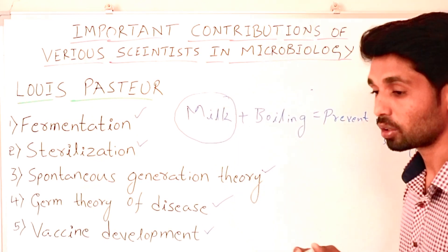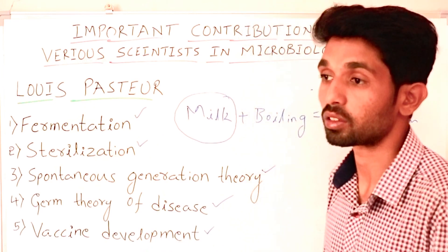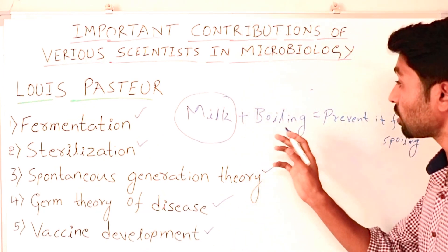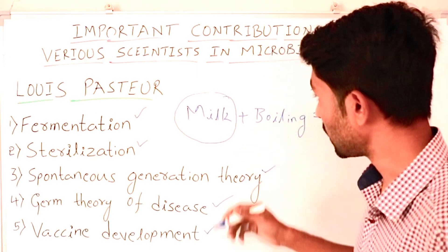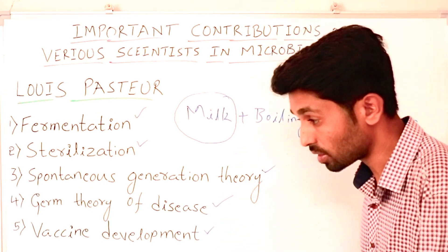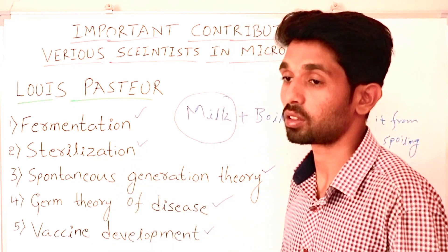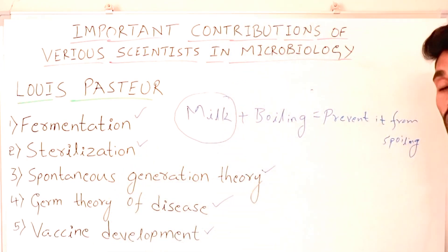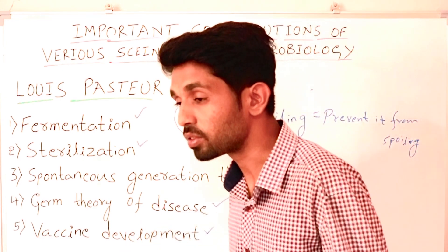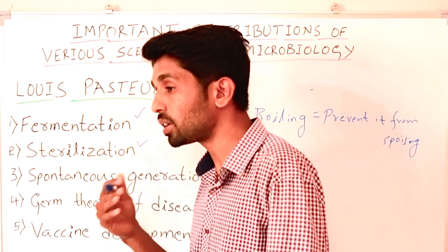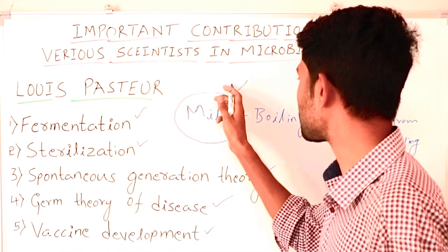For further protection of milk, we keep it in refrigerators. Boiling of milk is called sterilization by heating process, and keeping milk in the refrigerator is called sterilization by cooling process. Sterilization refers to any process that removes, kills, or deactivates the living microorganisms present in that particular substance.